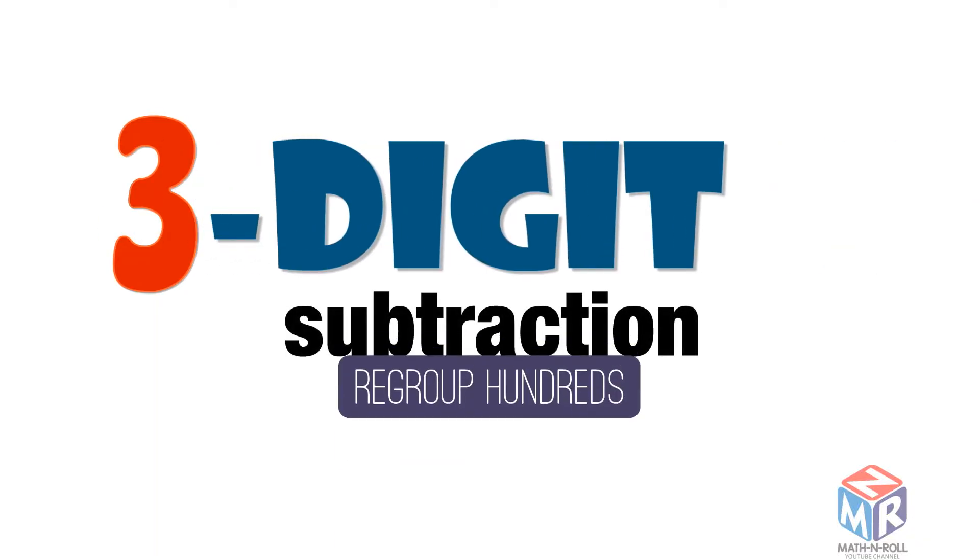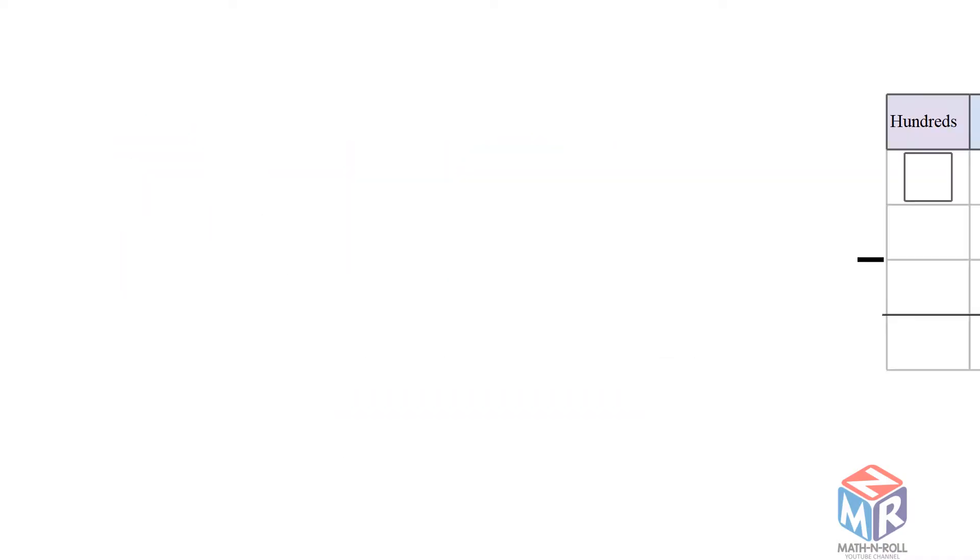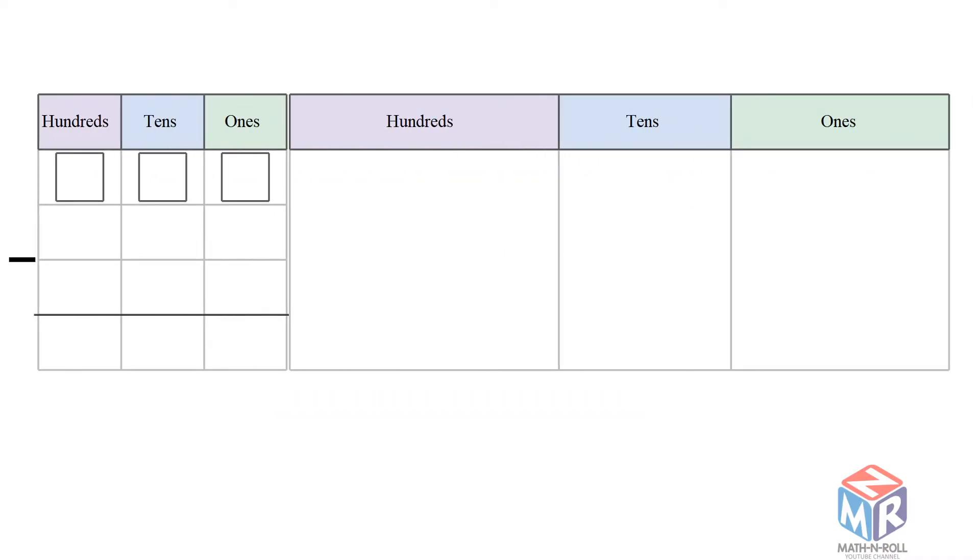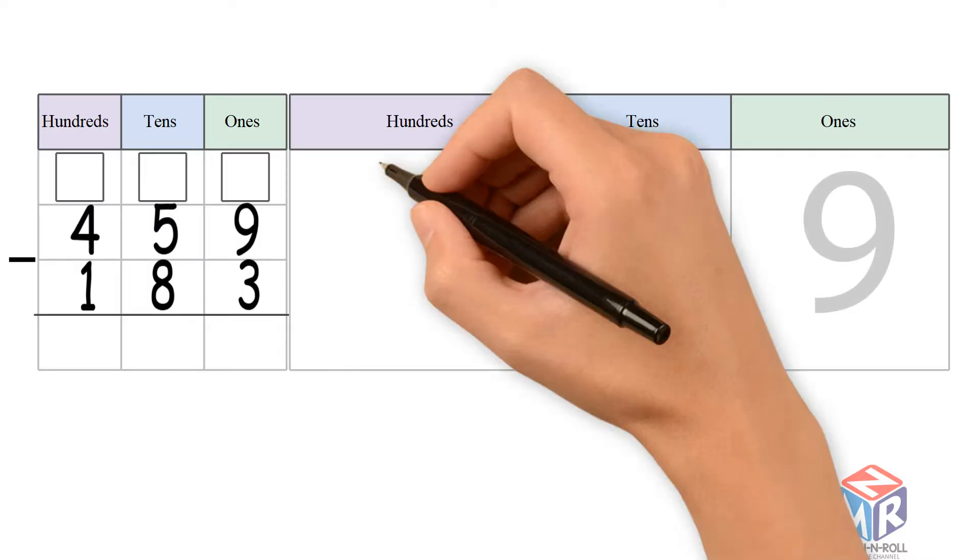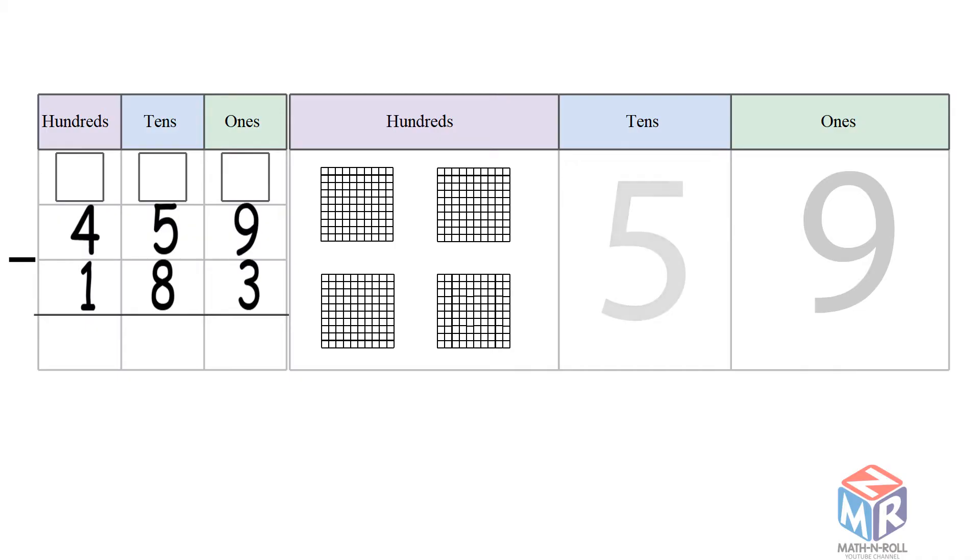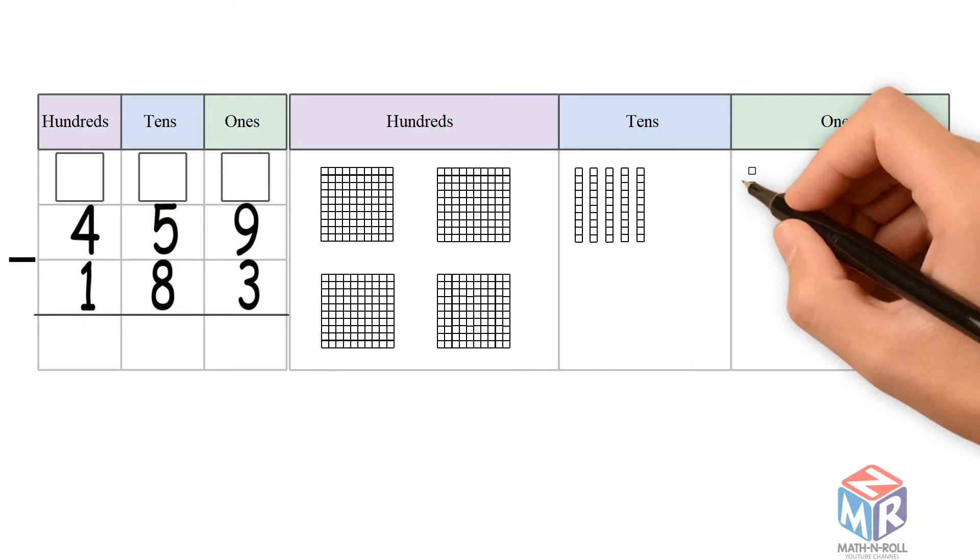3-digit subtraction. Regroup the hundreds. Let's try an example. 459 minus 183. Let's draw it out. 459 has 4 hundreds, 5 tens, and 9 ones.